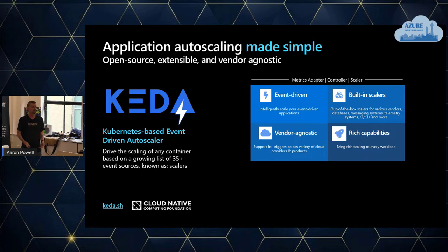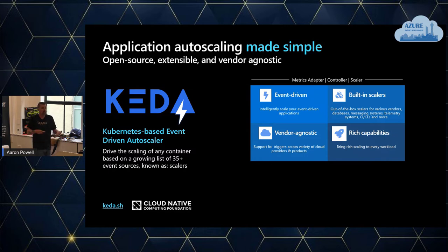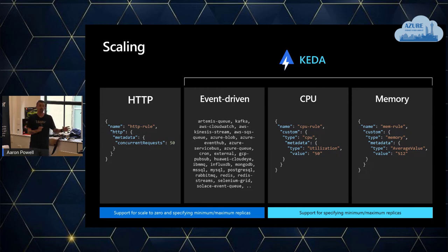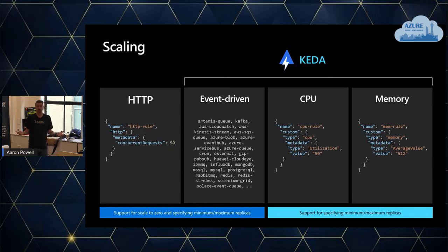Container Apps takes KEDA, which handles CPU, memory, event systems like Redis or queuing systems, and puts HTTP over the top so you can still deploy web-based endpoints. Are we receiving more requests than a single pod should take? Scale out. Receiving nothing? Scale back to zero. That's enough slides — let's have a look at a quick deployment of a Container Apps app.